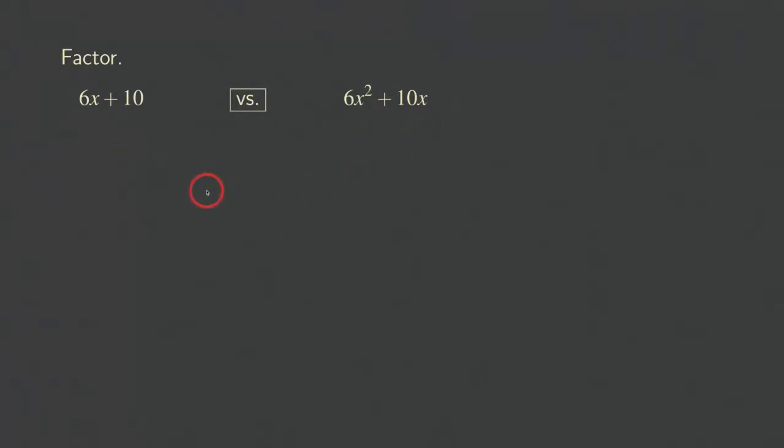This can be done really quickly. For the first one, 6x plus 10, we need to think about what numbers will go into the 6 and 10 at the same time. We want to find the largest such integer that will do that. You can see that both are even numbers, so 2 goes into both 6 and 10.